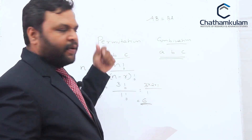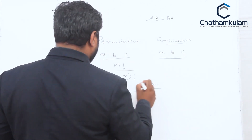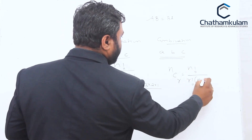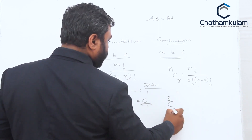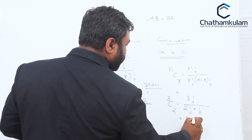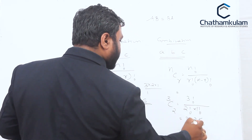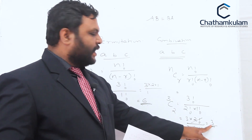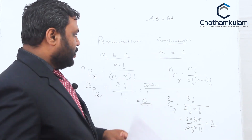In combination, if you are taking two at a time from three, the formula is nCr = n factorial divided by r factorial into (n minus r) factorial. Here 3C2 = 3! divided by 2! × 1! = (3×2!) divided by (2! × 1) = 3. So only three selections will happen in combination when taking two at a time from three letters.